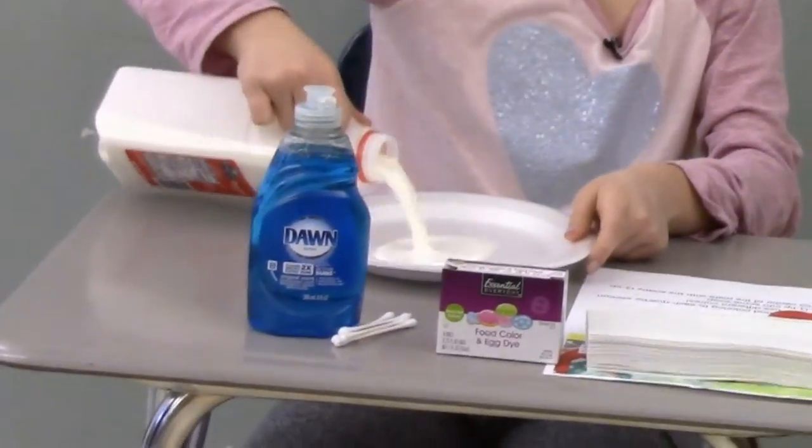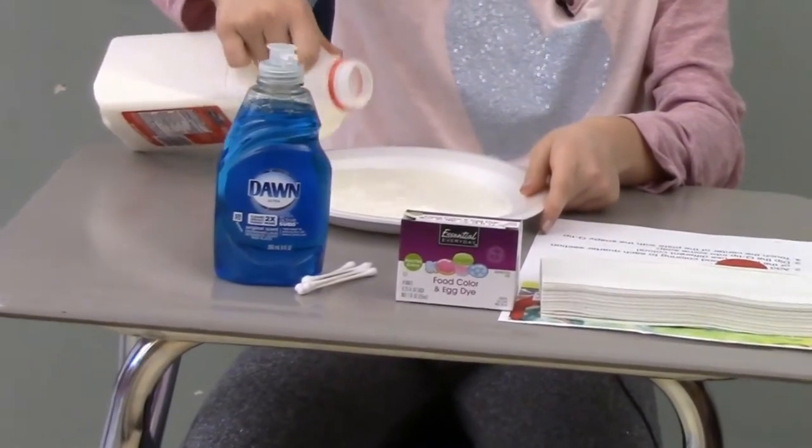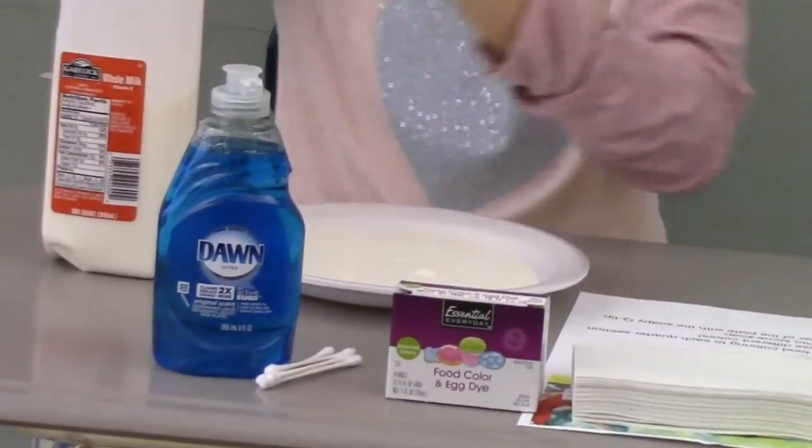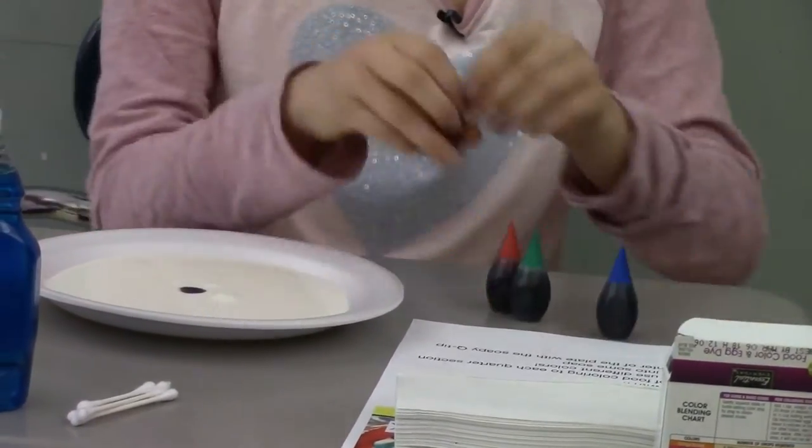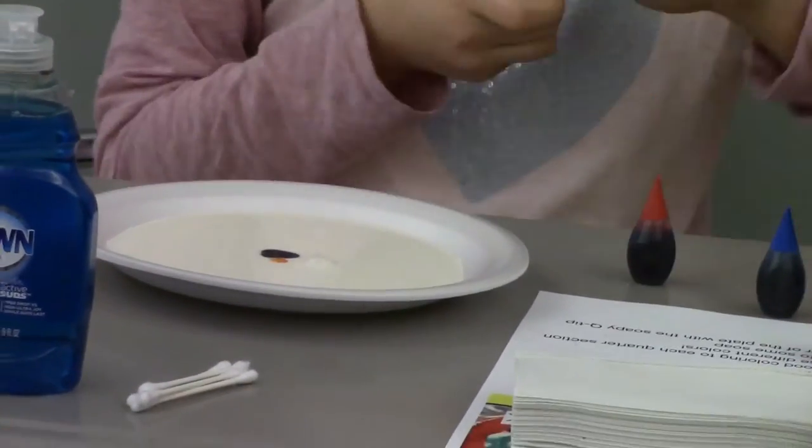So first you're going to take the whole milk and place it on the plate. Next, you're going to take the food coloring of your choice.